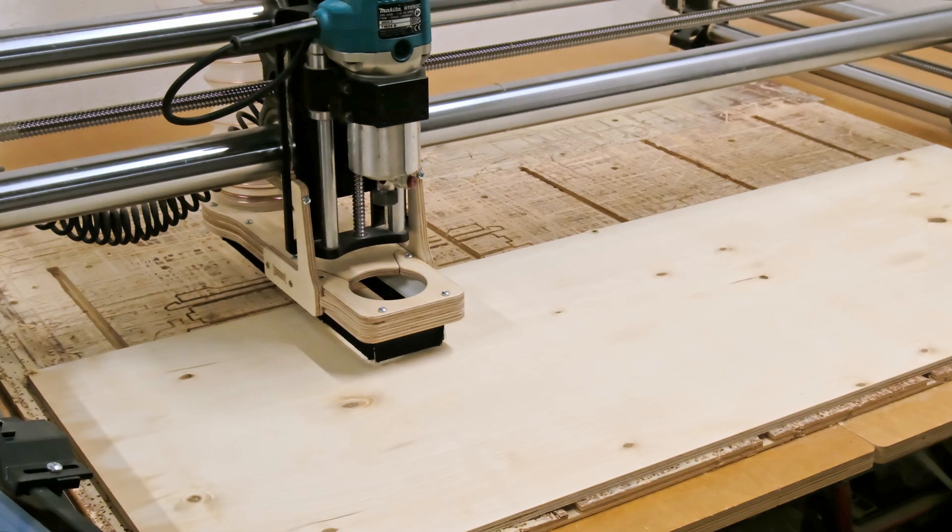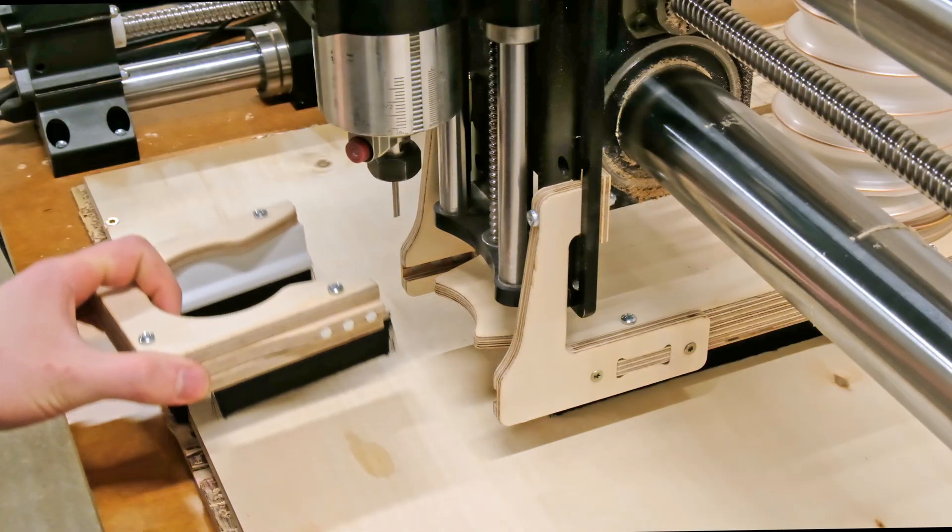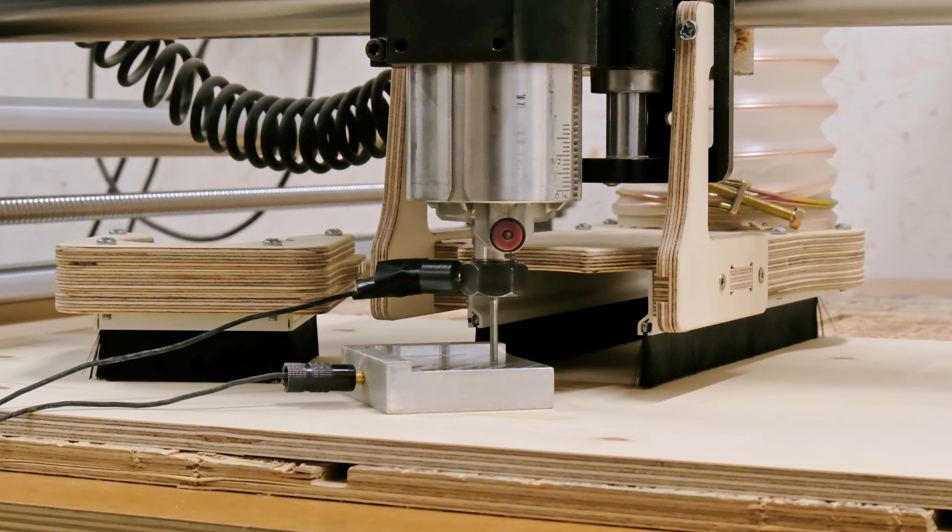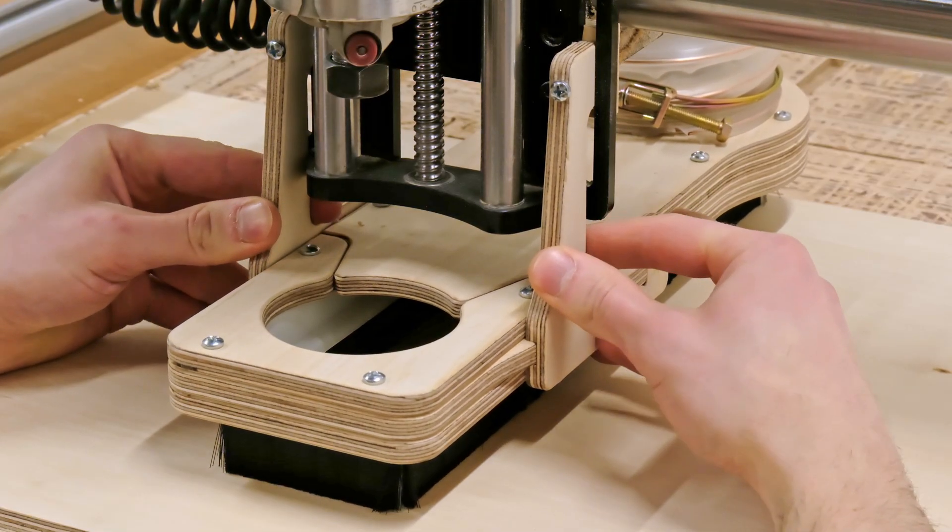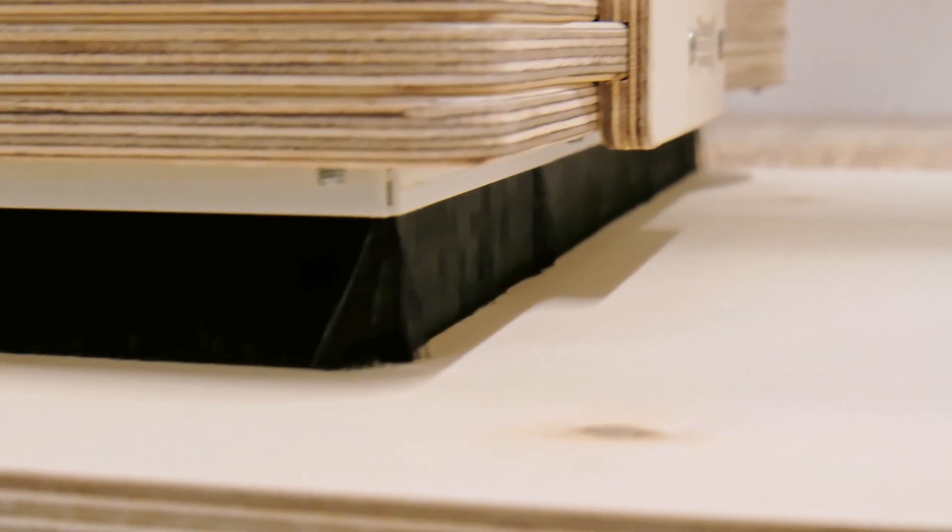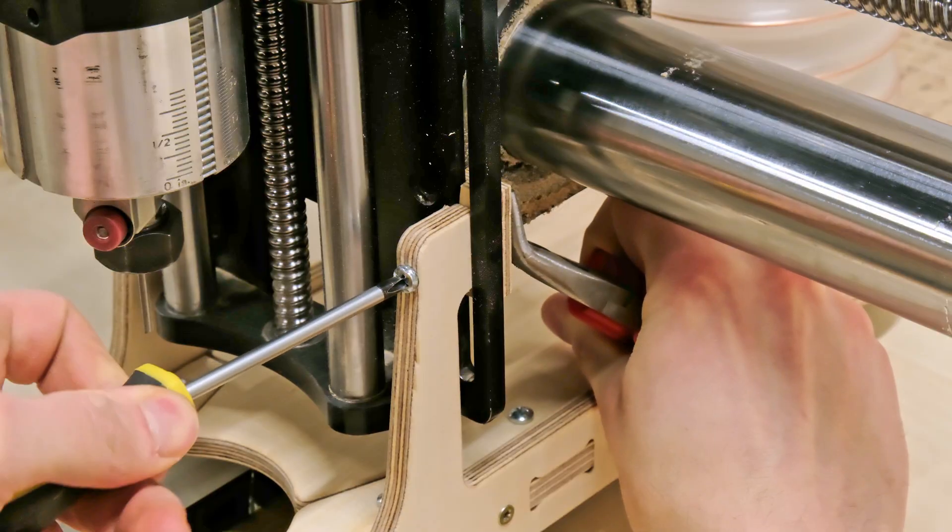For the test, we need to attach a plywood sheet on the CNC work surface, position the dust shoe at a proper height and calibrate the router bit. Adjusting the dust shoe is straightforward, just sliding it down so the brushes meet the top of the material and securing the mounting screw.